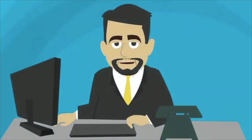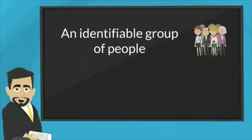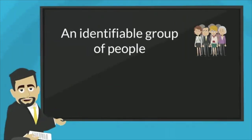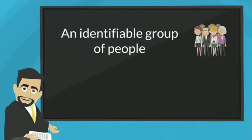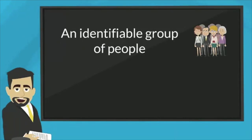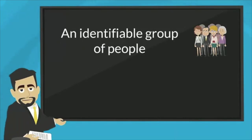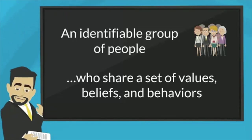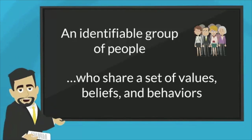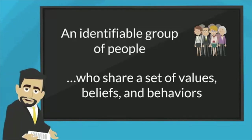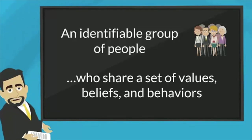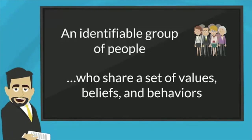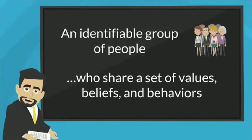Let's break this definition down so that we can understand it better. An identifiable group of people — if other people do not recognize them as a group, their culture may not be strong enough to really be a microculture. Who share a set of values, beliefs, and behaviors. This fits perfectly with the 3P model of culture that we looked at in Unit 1. Cultures are defined by their perspectives, practices, and products.